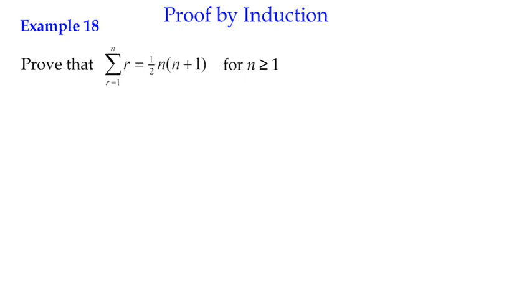The structure of proof by induction, which I explained in a bit more detail back then. The conjecture here is that the sum of r terms, from r equals 1 to n, can be given by the formula a half n times n plus 1.